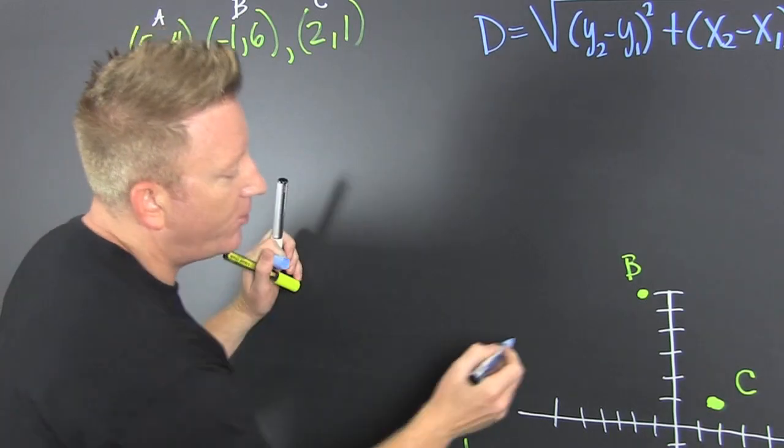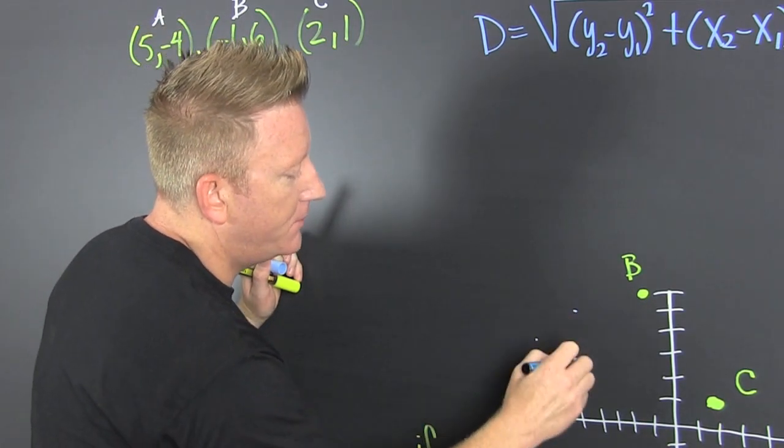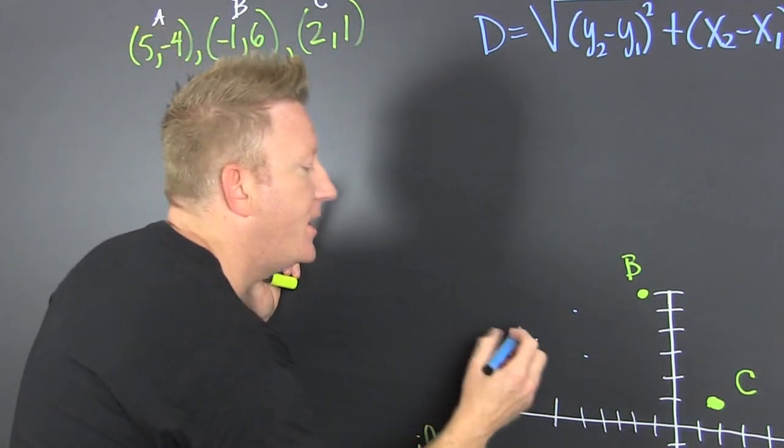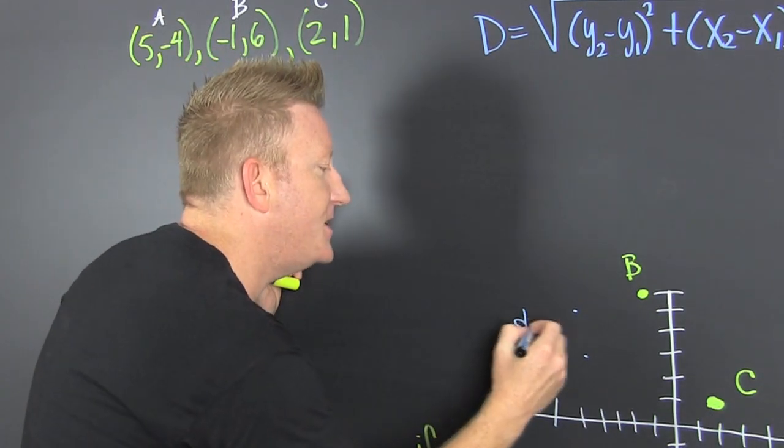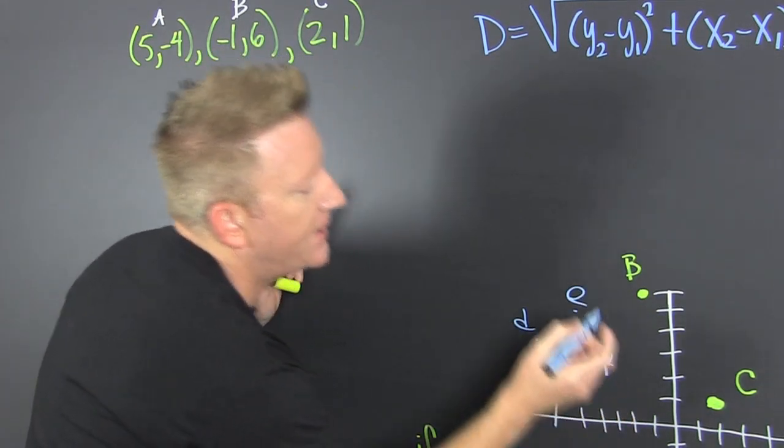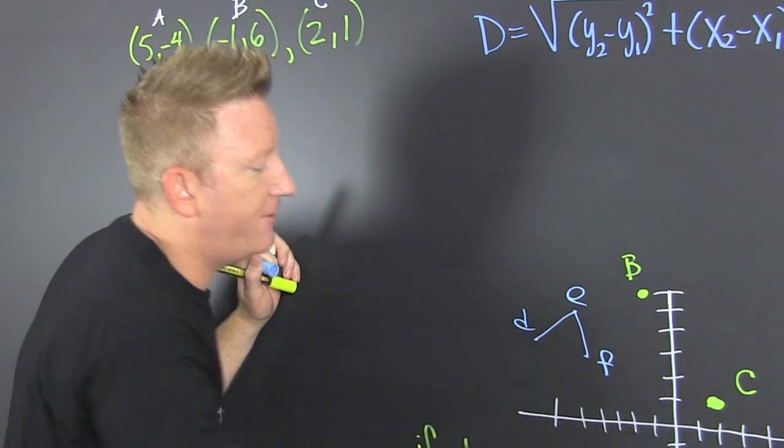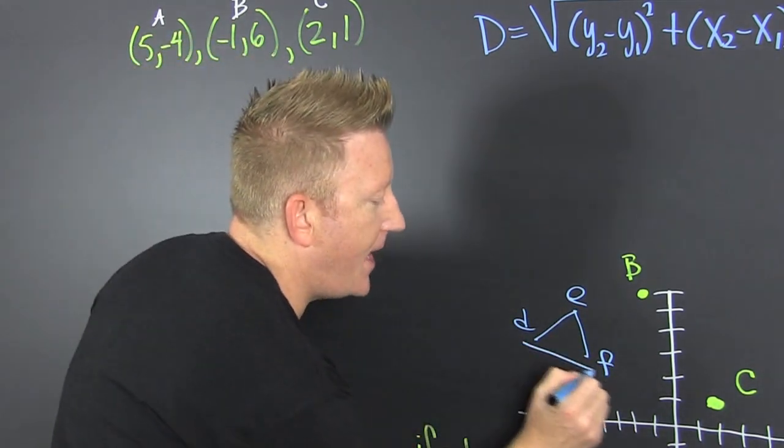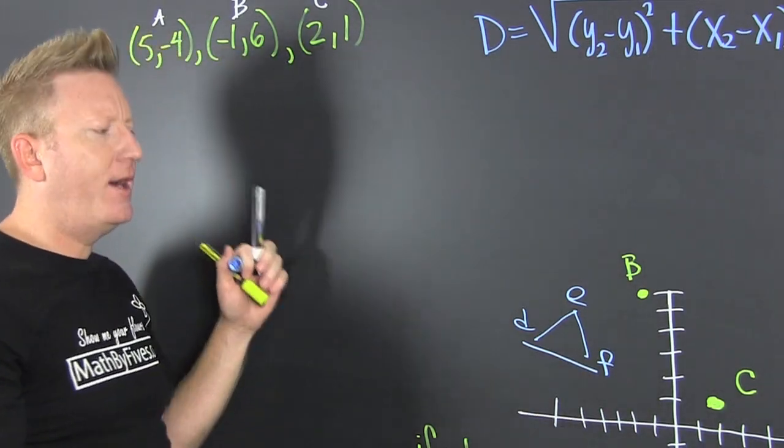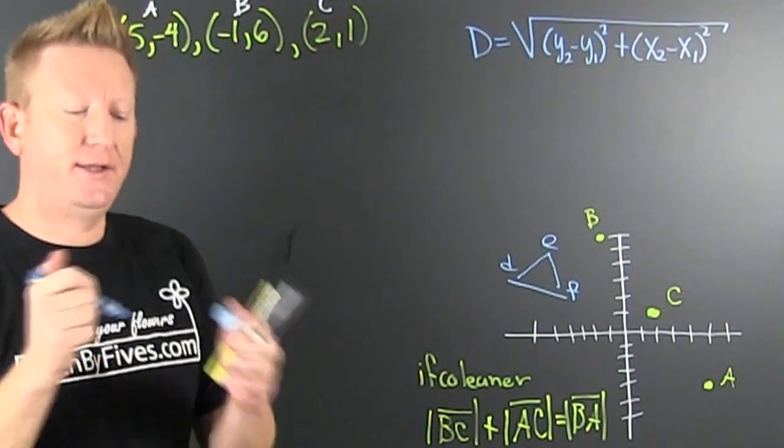Imagine if they weren't. What if it was like ABC, if that was DE and F, then if you were looking at DE plus EF would that be the same as DF? Nope. It's that whole triangle inequality.